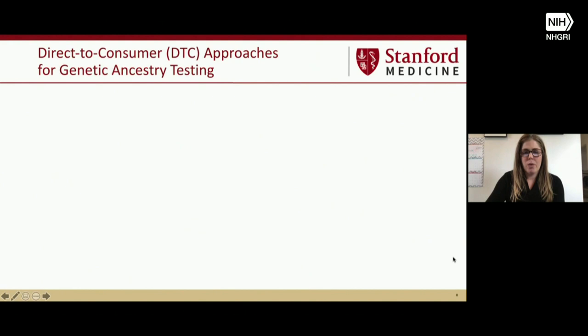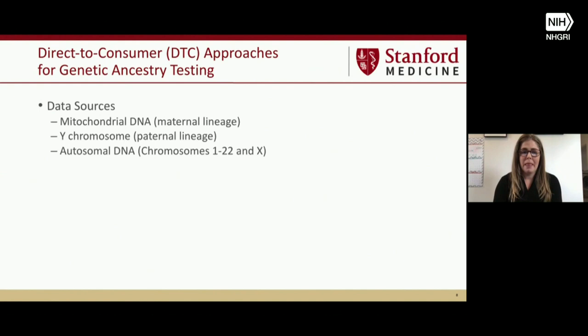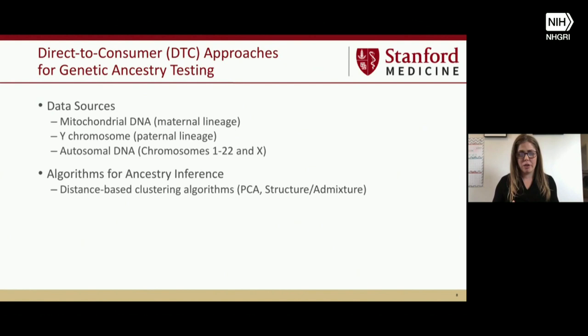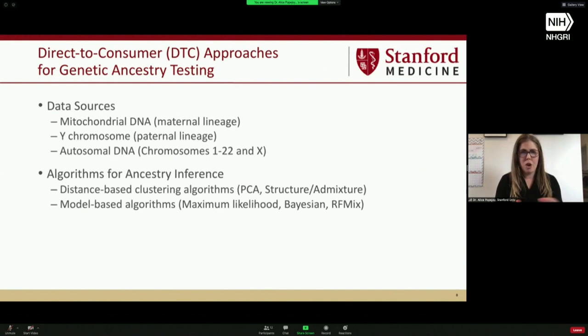So how do you actually get an ancestry test from a direct-to-consumer company? There are different data sources: one is a mitochondrial DNA test for maternal lineage, another is Y chromosome testing for paternal lineage, and then there's autosomal DNA — all the other chromosomes and the X chromosome. There are also different algorithms companies use to infer ancestry. Distance-based clustering algorithms find groupings of individuals based on genetic variant differences. Model-based algorithms test whether a proposed model fits your data. Each approach yields its own kind of estimate.